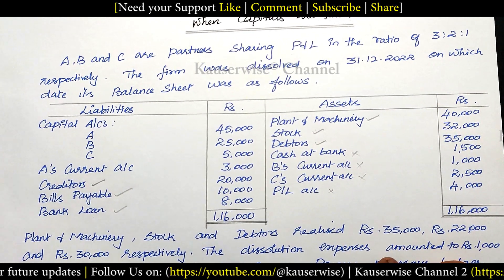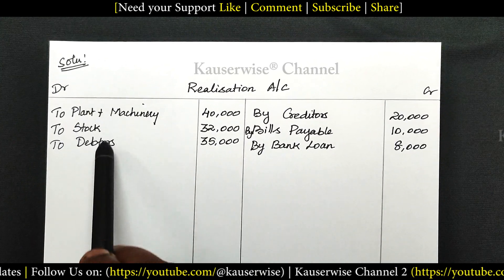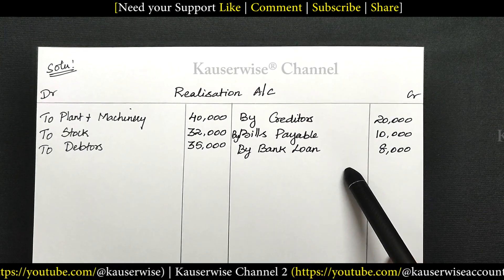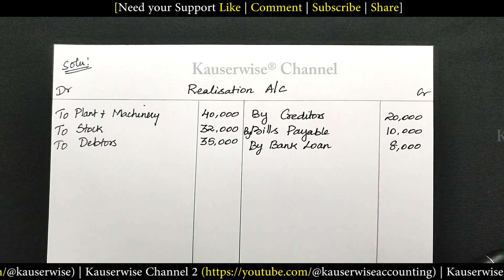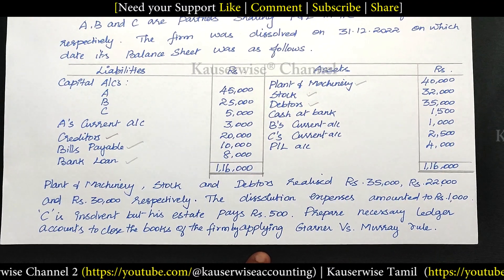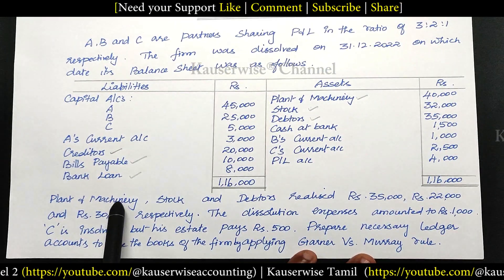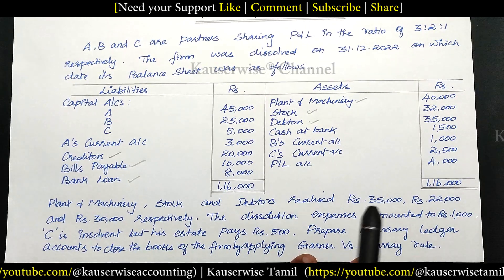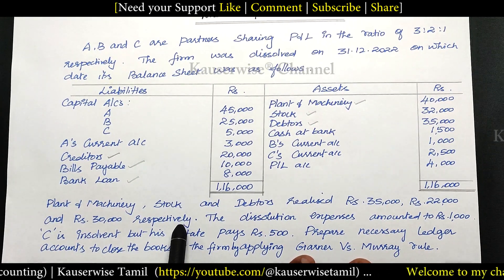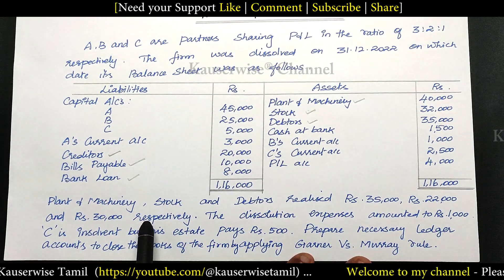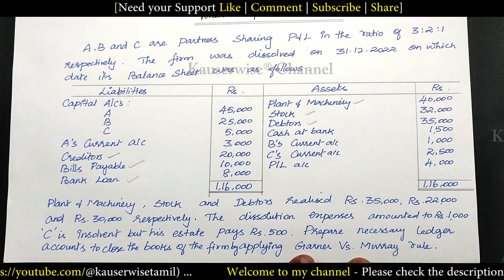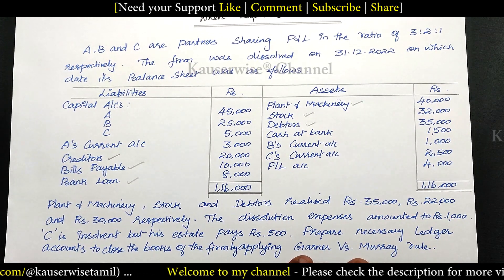See the realization account — on the debit side we have entered all the assets and on the credit side we have entered all the third-party liabilities. Now see the adjustments for realization of cash and payments. Plant and machinery, stock, and debtors were realized for 35,000, 22,000, and 30,000 respectively. The total realization amount we need to enter under the realization account credit side — total realized amount is 87,000.